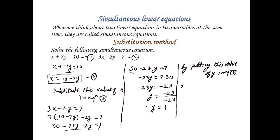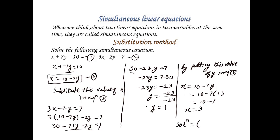Therefore y is equal to 1. Now by putting this value of y into equation 3: x is equal to 10 minus 7y, which is 10 minus 7 times 1, which equals 10 minus 7, so x is equal to 3.